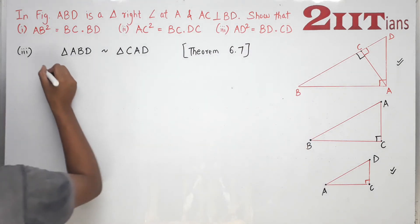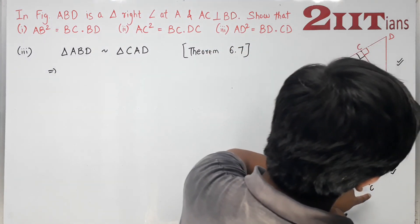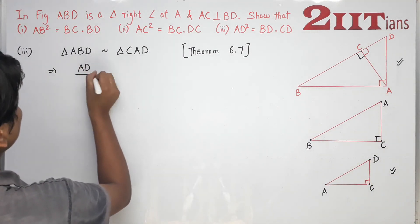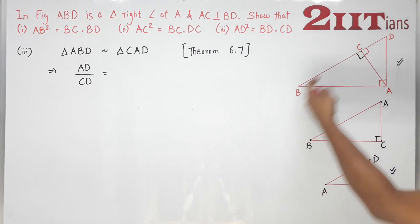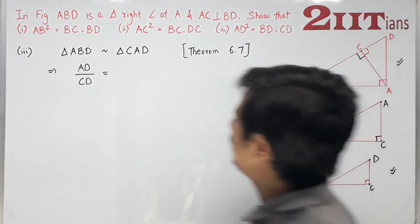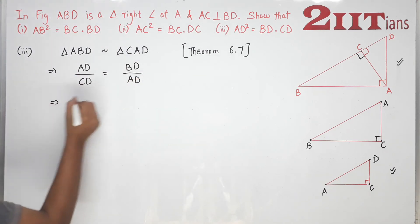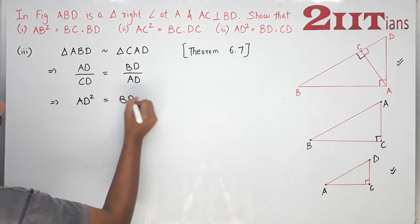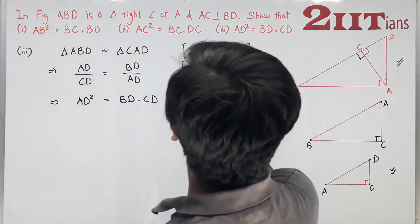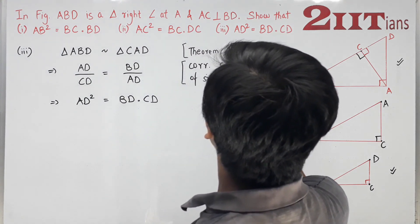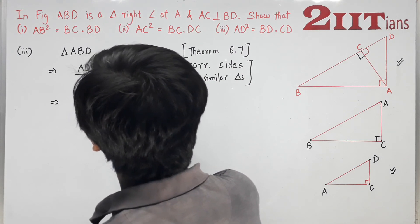From the similarity of Triangle ABD and Triangle CAD, we can immediately write: AD divided by CD equals BD divided by AD. This is corresponding sides of similar triangles. Cross multiplying, AD squared equals BD multiplied by CD. Hence proved. So this question is now done.